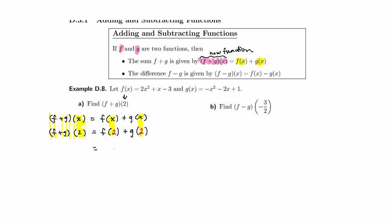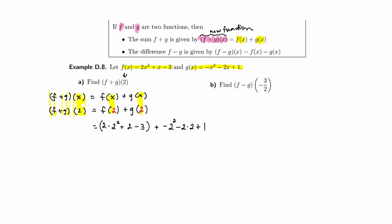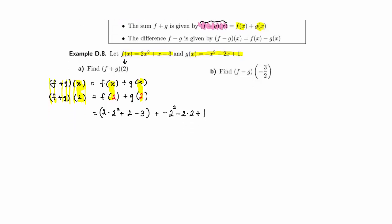So we get f of 2 plus g of 2, and notice now the x's were replaced by the number 2 as it was on the left side. Now we evaluate each function given to us above at the x value 2, and then add those two values together. So now I'll put in parentheses 2 times 2 squared plus 2 minus 3 plus negative 2 squared minus 2 times 2 plus 1.